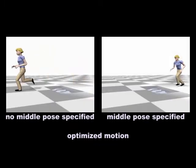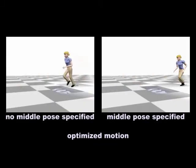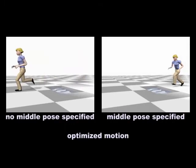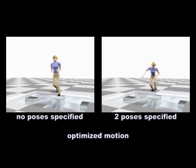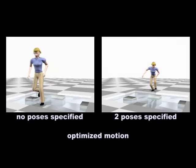In this example, the user controls the spread of the legs in the middle of the jump. The user specifies two poses to generate a run over stones where the feet are raised higher.